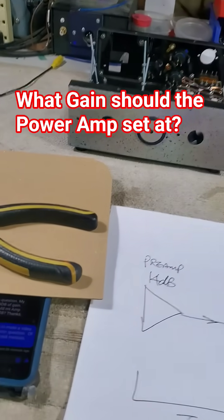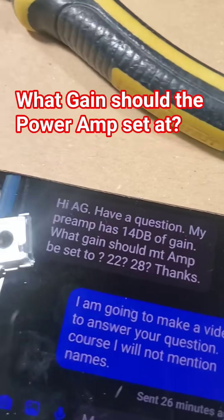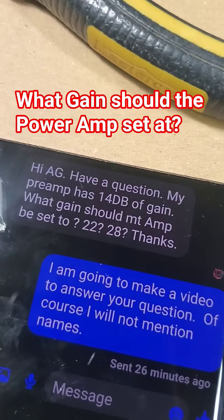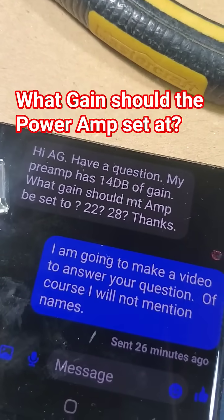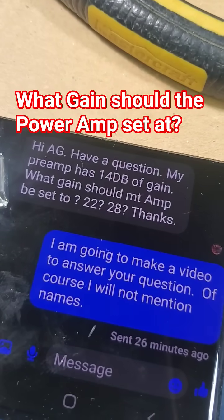I am working on my bench today and all of a sudden somebody asked me this question. He said, I have a question. My preamp is 14 dB of gain. What gain should my power amp be set to? 22 or 28? Thanks.